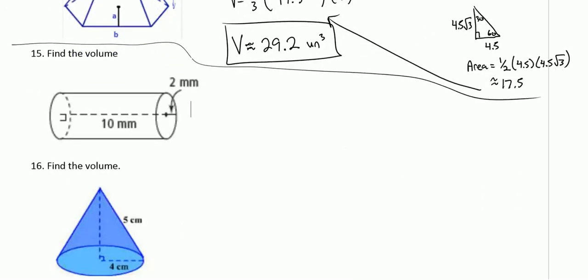Number 15, we have a cylinder. The radius of that base is 2 and the height is 10. The volume is pi r squared times the height, so that's 40 pi cubic millimeters.